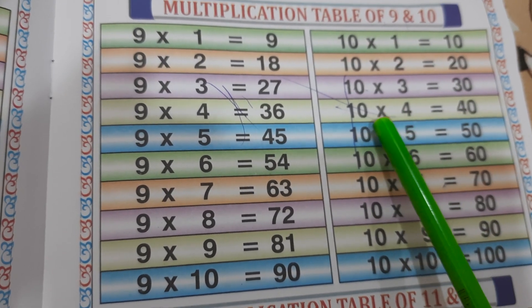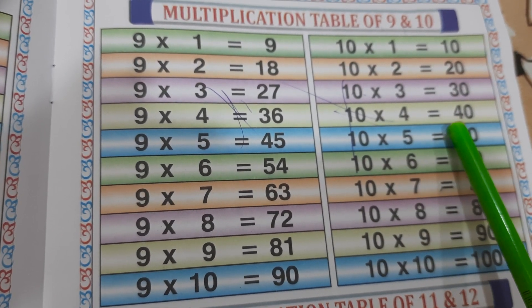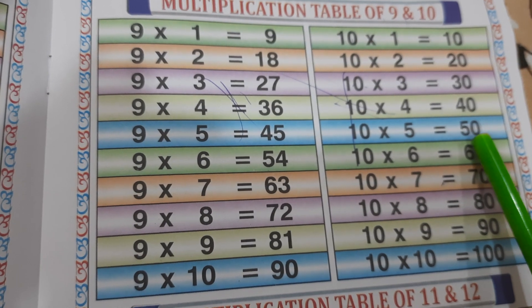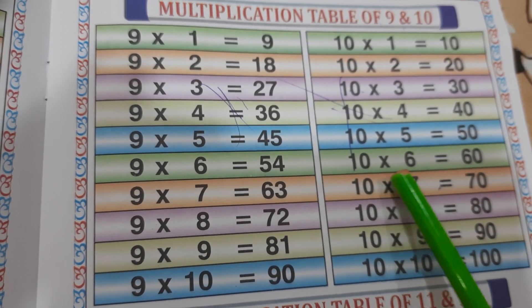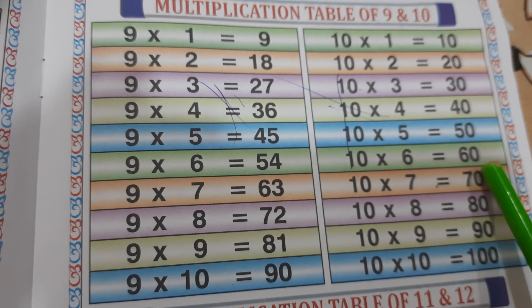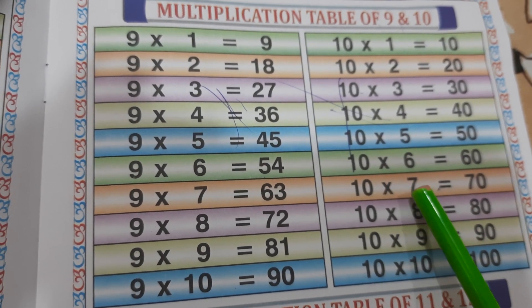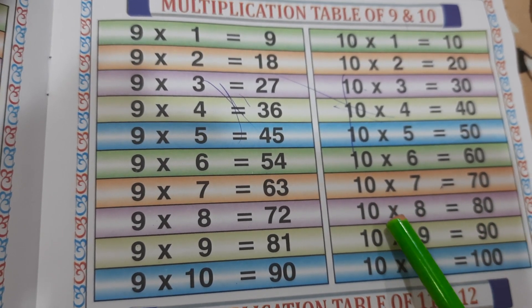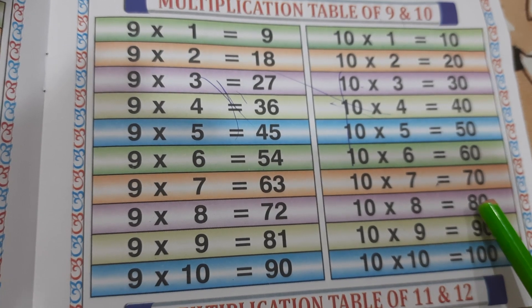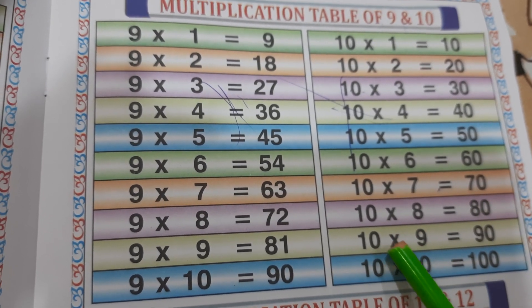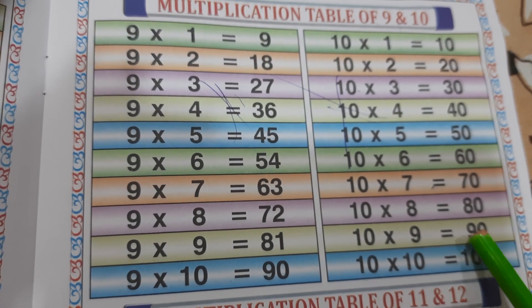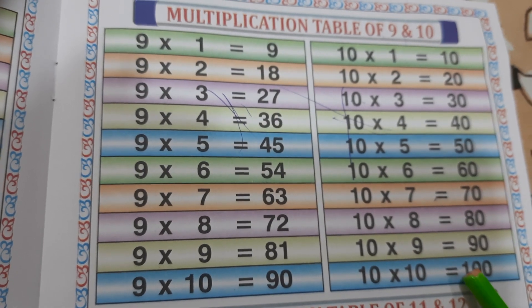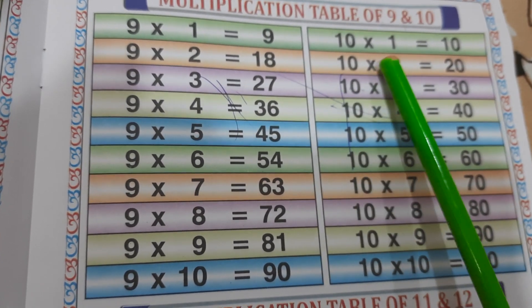10 4's are 40, 10 5's are 50, 10 6's are 60, 10 7's are 70, 10 8's are 80, 10 9's are 90, 10 10's are 100.